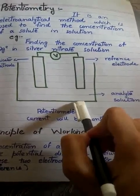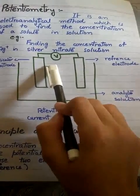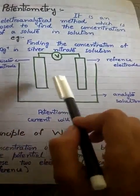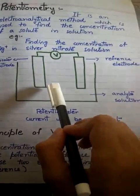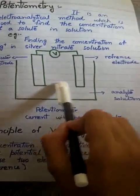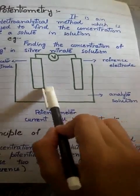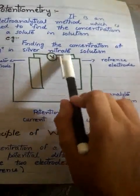Oxidation or reduction takes place on the indicator electrode. And because of this redox reaction, a potential difference is created between these two electrodes, which is measured by a voltmeter.